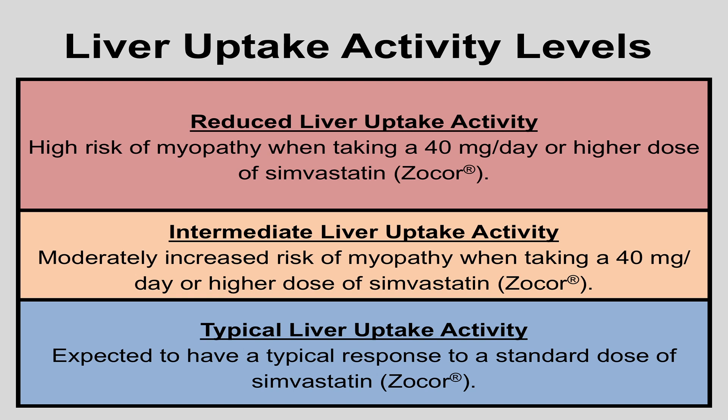Your predicted liver uptake activity level may be useful to your healthcare provider in making dosing decisions if you need to take Simvastatin. It is important to keep in mind that the assigned liver uptake activity level is based only on your SLCO1B1 genetic results. Other information, such as your age, weight, or other medications, may determine the dose and type of drugs that you are prescribed. In some cases, genetic testing provides some information to help determine the liver uptake activity level, but the specific level cannot be predicted. In other rare cases, the CPMC will not be able to predict a liver uptake activity level due to a technical limitation in the testing process.